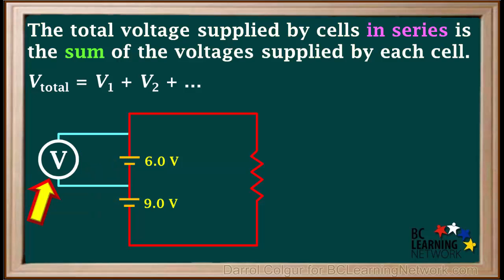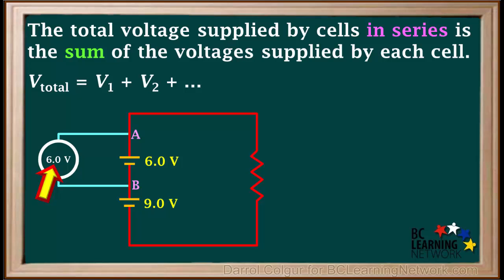A voltmeter measures the difference in electrical potential of electrons, or what is called potential difference, between different points in a circuit. The leads from the voltmeter touch the circuit at point A and point B, so it measures the potential difference between point A and point B — the reading is 6 volts. When the leads touch point B and point C, it measures the potential difference between points B and C, so it reads 9 volts.